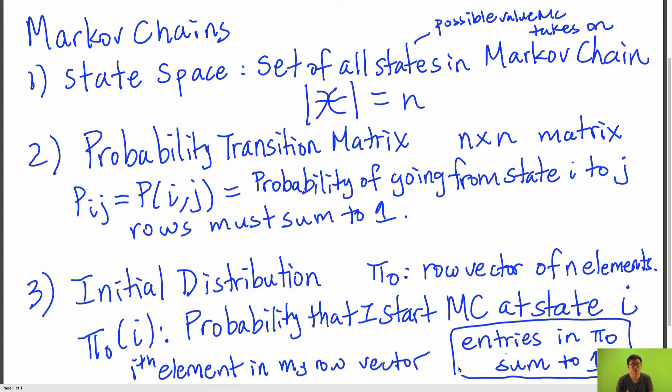So to recap, there are three components of a Markov chain: the state space, the probability transition matrix, and an initial distribution.